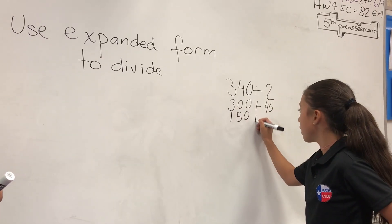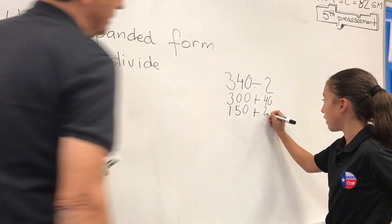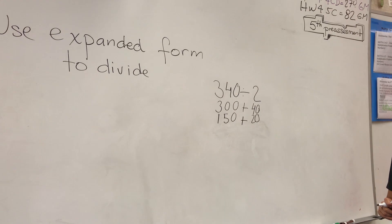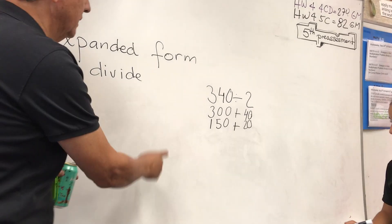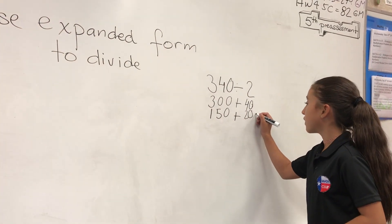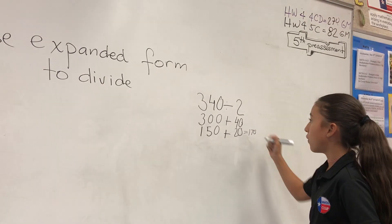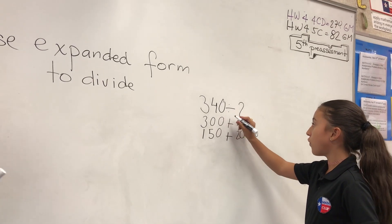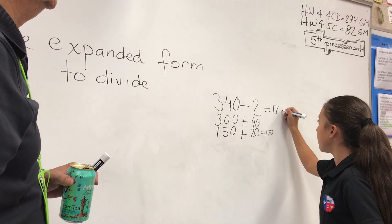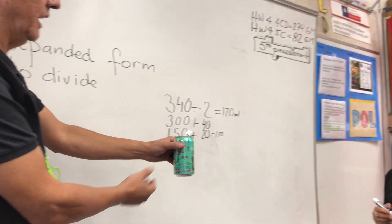150 plus the half of 40. So the half of 300 plus the half of 40. How much is this? It equals 170. So 340 divided by 2 equals 170 milliliters.